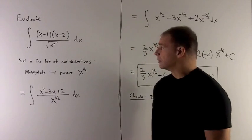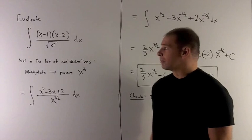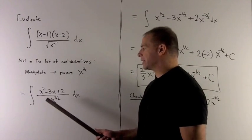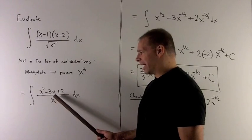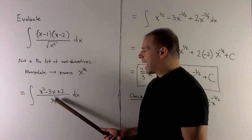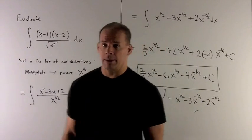The first thing we note, in the top, we can multiply this out. And then in the bottom, we can get rid of the square root sign. So if I multiply out the top, we get x squared minus 3x plus 2. In the bottom, we have x to the 3 halves. And then we know we'll be able to divide the bottom into each term in the top, and things will start looking a little bit better.